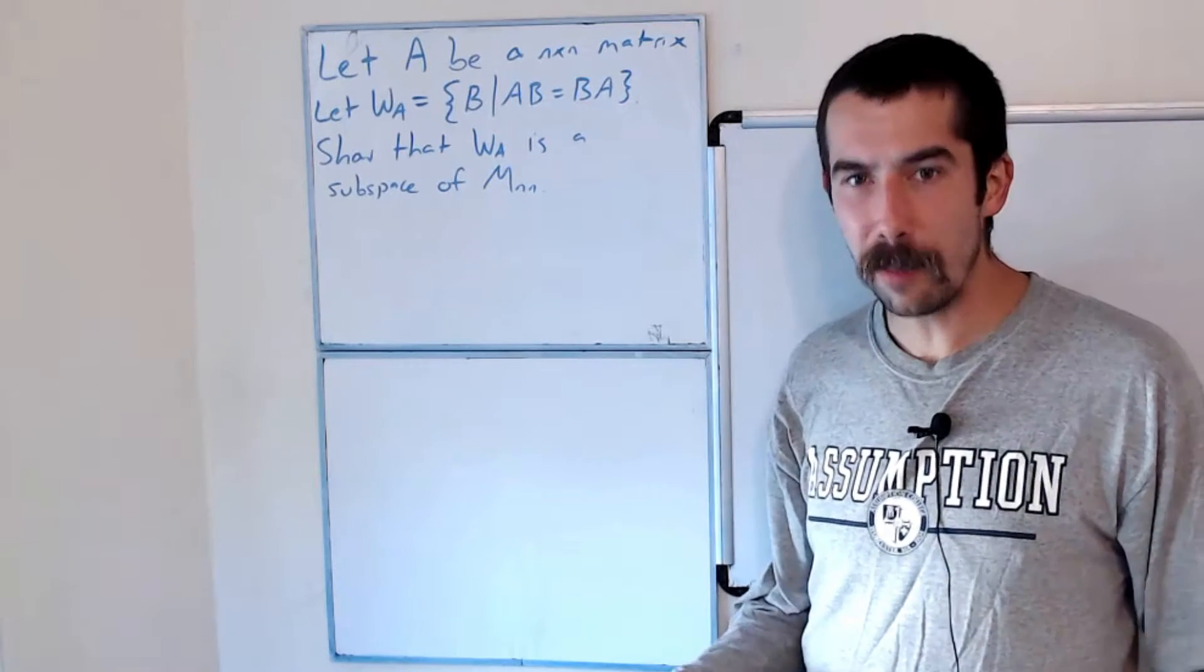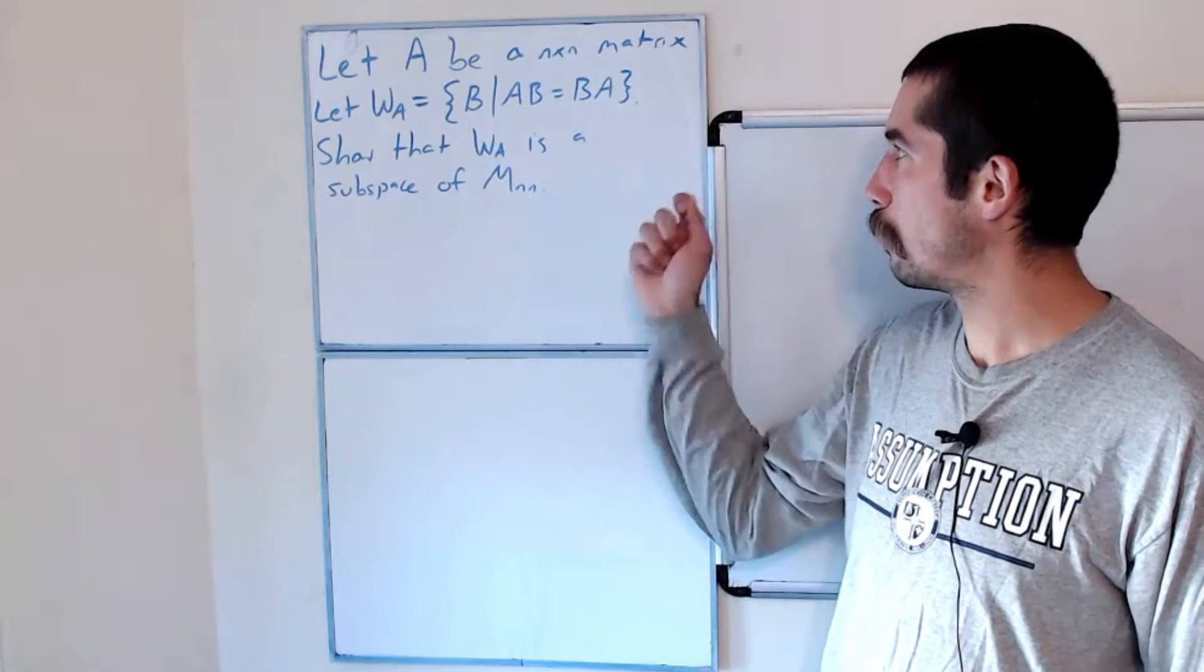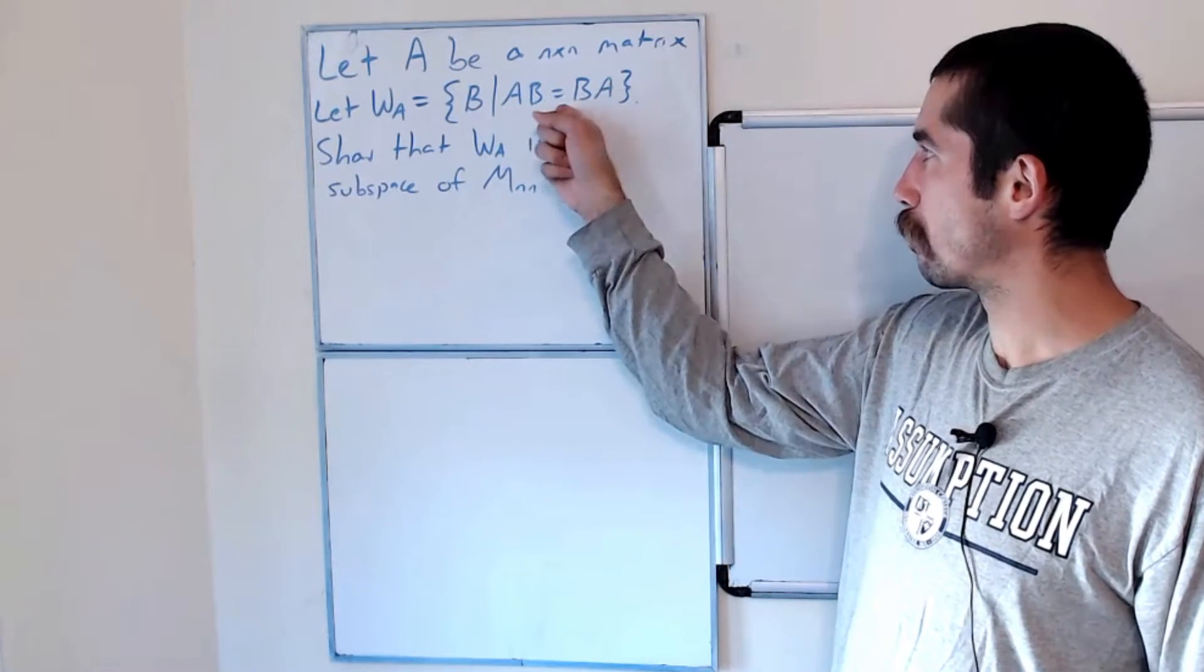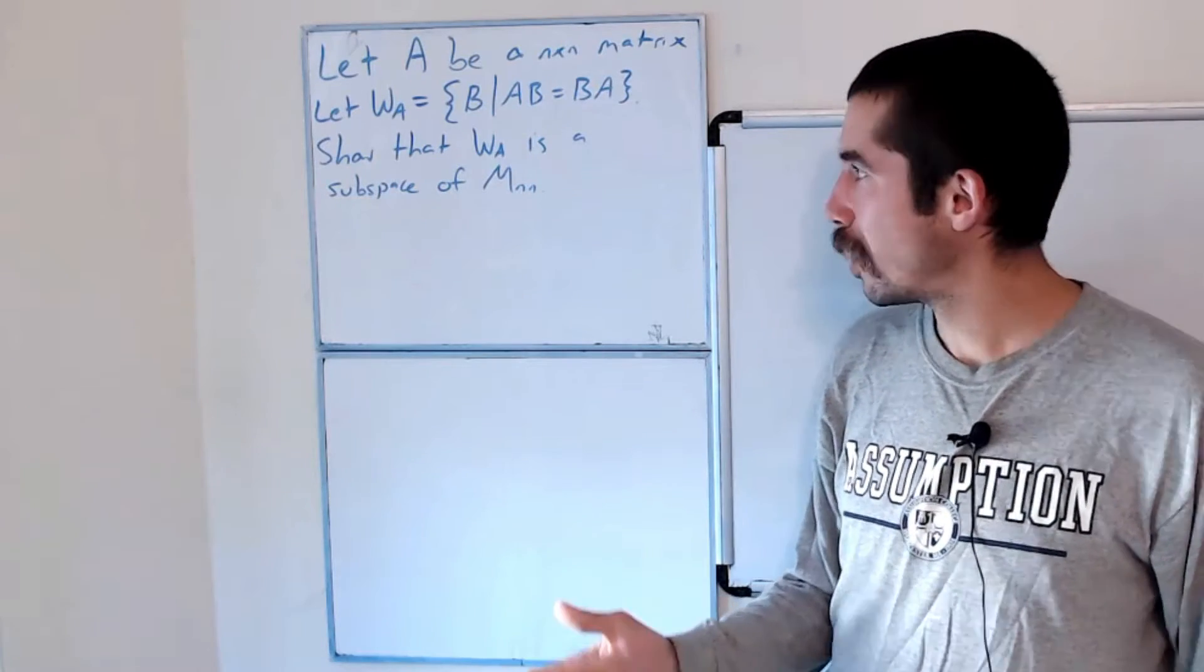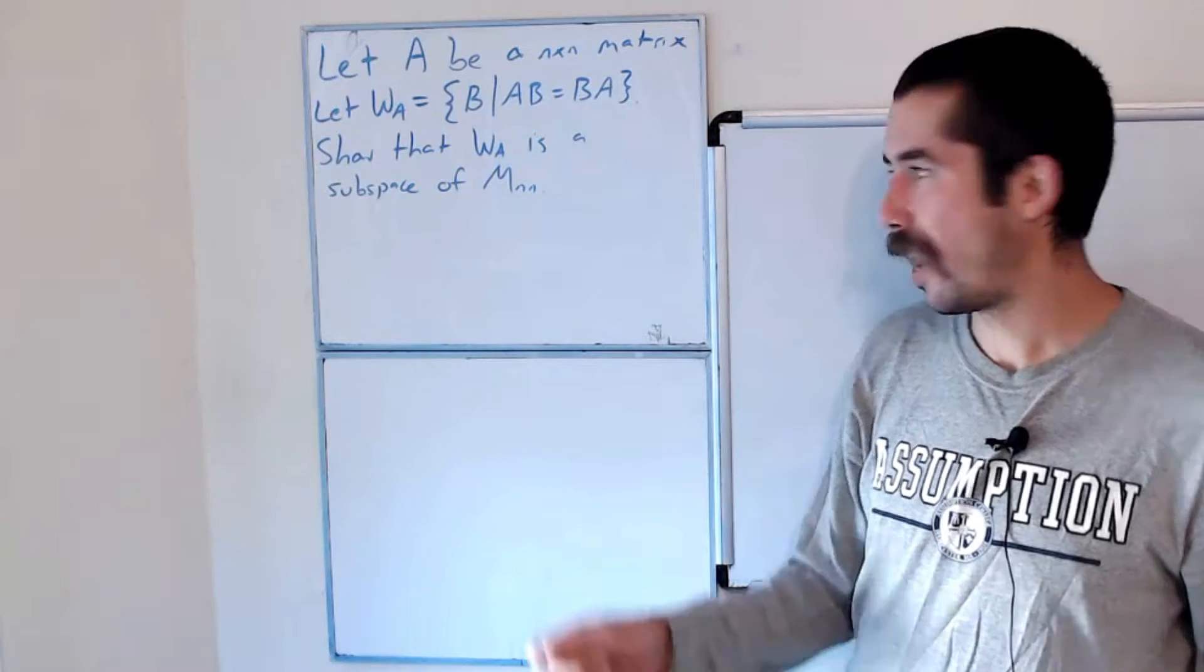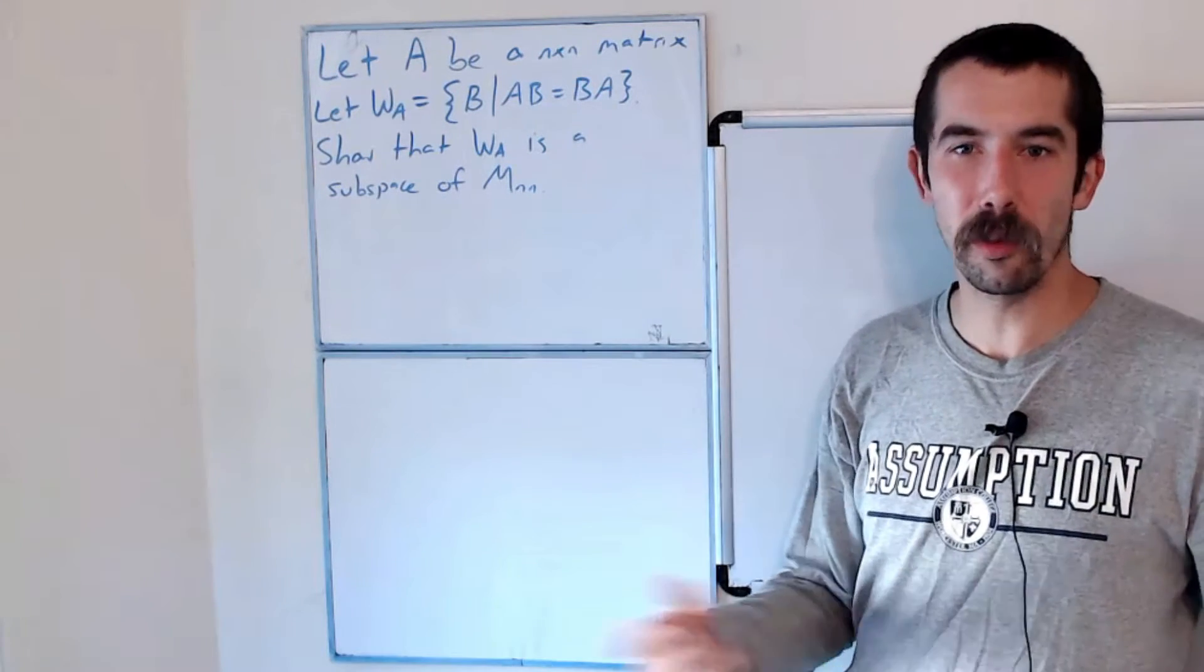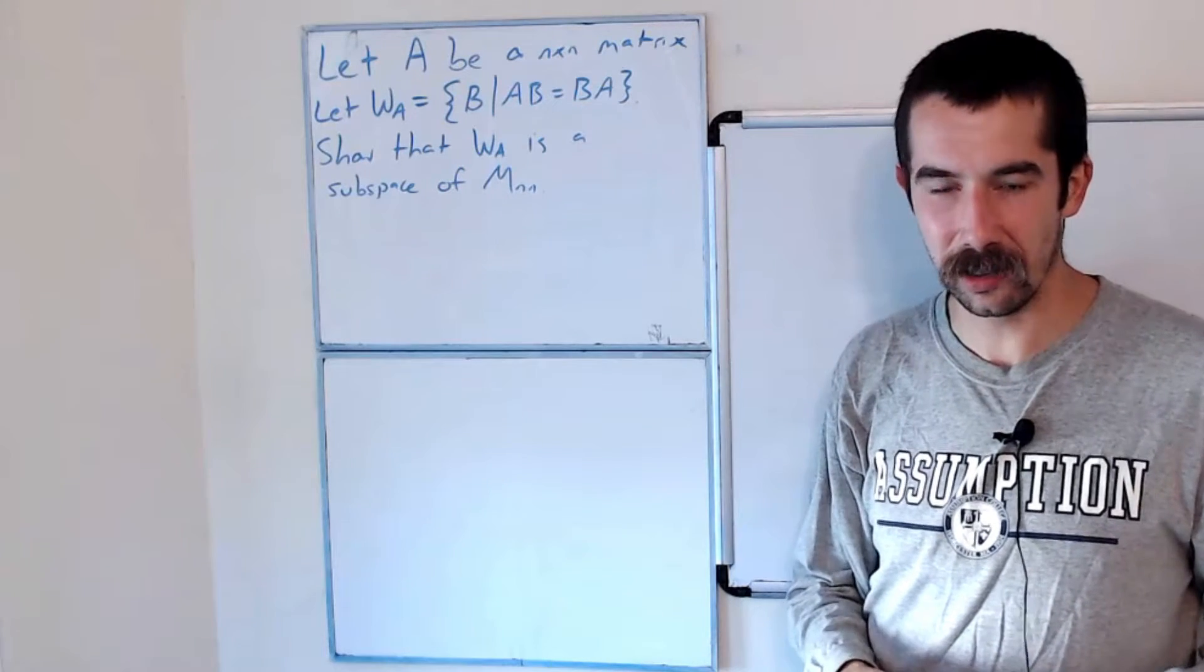Let A be an n by n matrix. And we'll define W sub A to be the set of all matrices B that commute with A, so AB is equal to BA. And what we want to show is that W sub A is a subspace of M_nn. So this is the set of all n by n matrices with normal matrix addition and scalar multiplication.